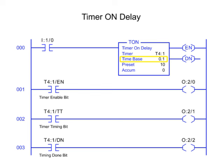Time base of the timer instructions is expressed in seconds. Common time base values include .01, .10, 1.0, and 10 seconds.